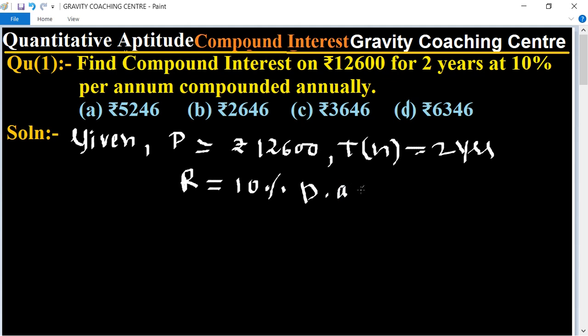So what is its compound interest CI equal to what? First of all we will find the amount. The formula of amount equal to principal into one plus rate by 100 upon time equal to the principal equal to 12,600.